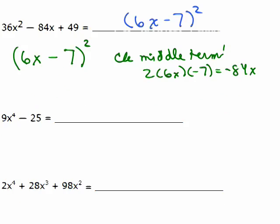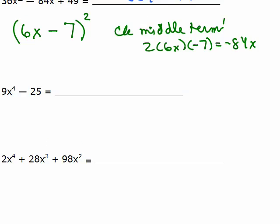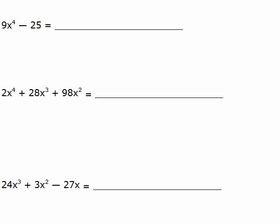Alright, 9x to the 4th minus 25. Well, this is the difference of 2 squares again, so what times itself is 9x to the 4th? 3x squared, and what times itself is 25? 5, 5, so 1's a plus, and 1's a minus 5.